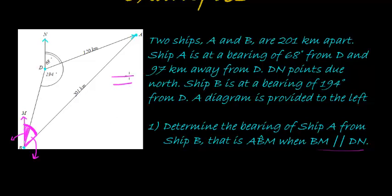Since DN and BN are parallel, we have various things. For example, alternate angles are equal. We also have co-interior angles — in other words, they add up to supplementary angles, they add up to 180 degrees. And if we have two parallel lines, then corresponding angles are equal. I can't remember those names right now.